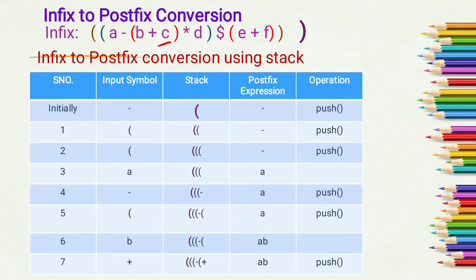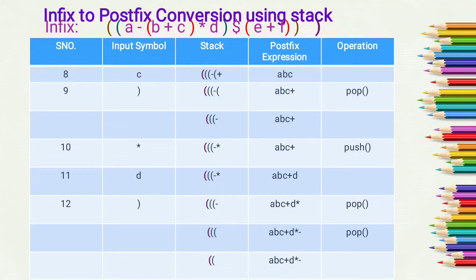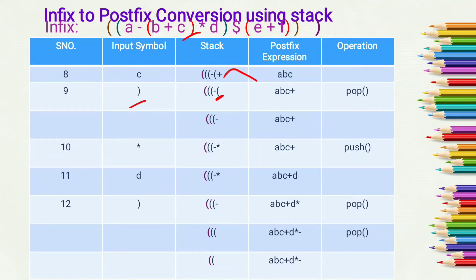The next input symbol is plus. As plus has higher precedence than the open bracket, we push it to the top of the stack. Next input symbol is 'C', which is an operand, so we put it into the postfix expression. Next input symbol is a closing bracket. When a closing bracket comes, we pop operators one by one from the stack until we get an open bracket — so plus is popped and added into the postfix expression.